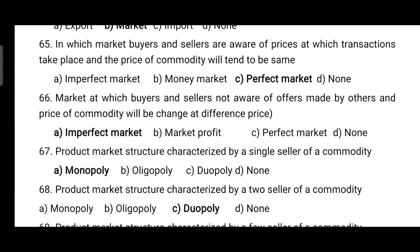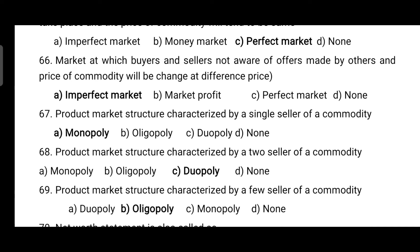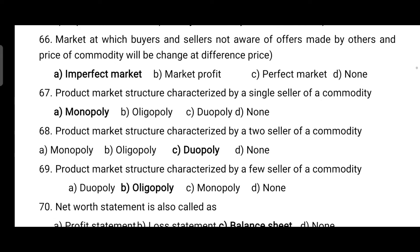In a perfect market, buyers and sellers are aware of the price at which a transaction is to take place, and the price of a commodity tends to be the same. In an imperfect market, buyers and sellers are not aware of offers made by others, and the price of a commodity can differ.